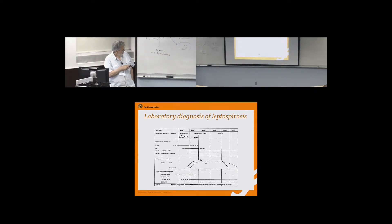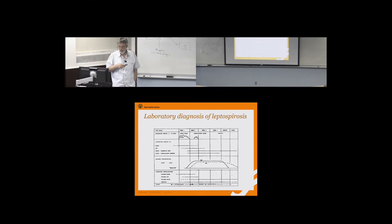Leptospires circulate in the blood and are removed by the humoral response. IgM comes up a little bit earlier than IgG. For laboratory diagnostics, you can cultivate — or also use PCR — from the blood in the acute phase, from CSF somewhat later, and from urine later still. Serology does not contribute much during the first week of disease.